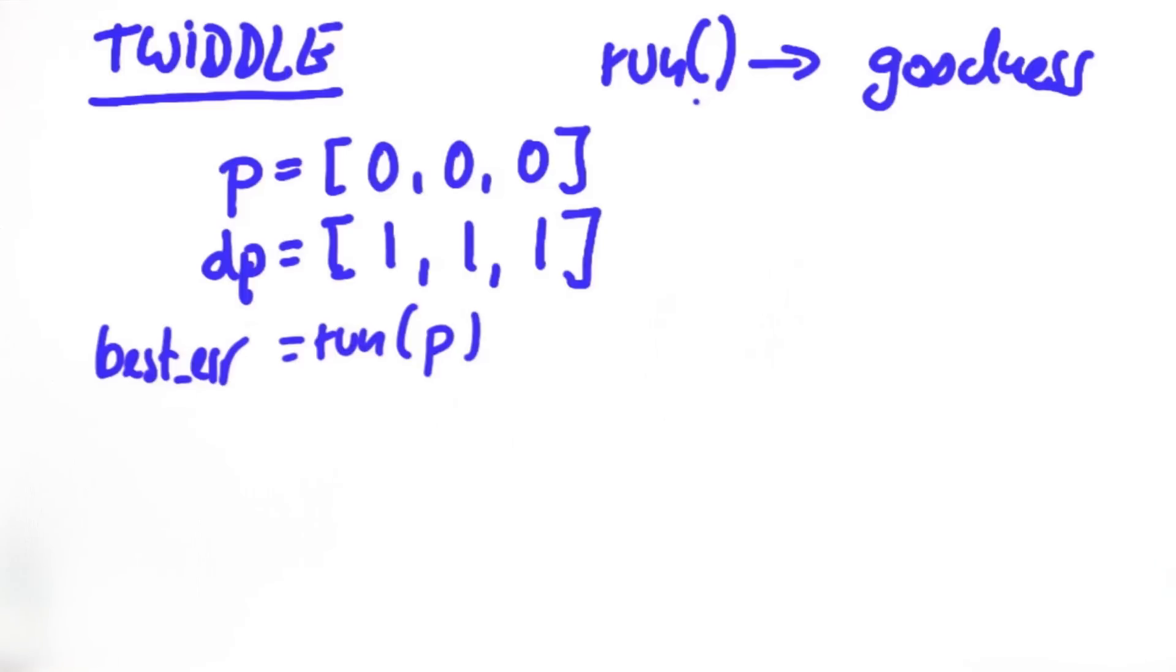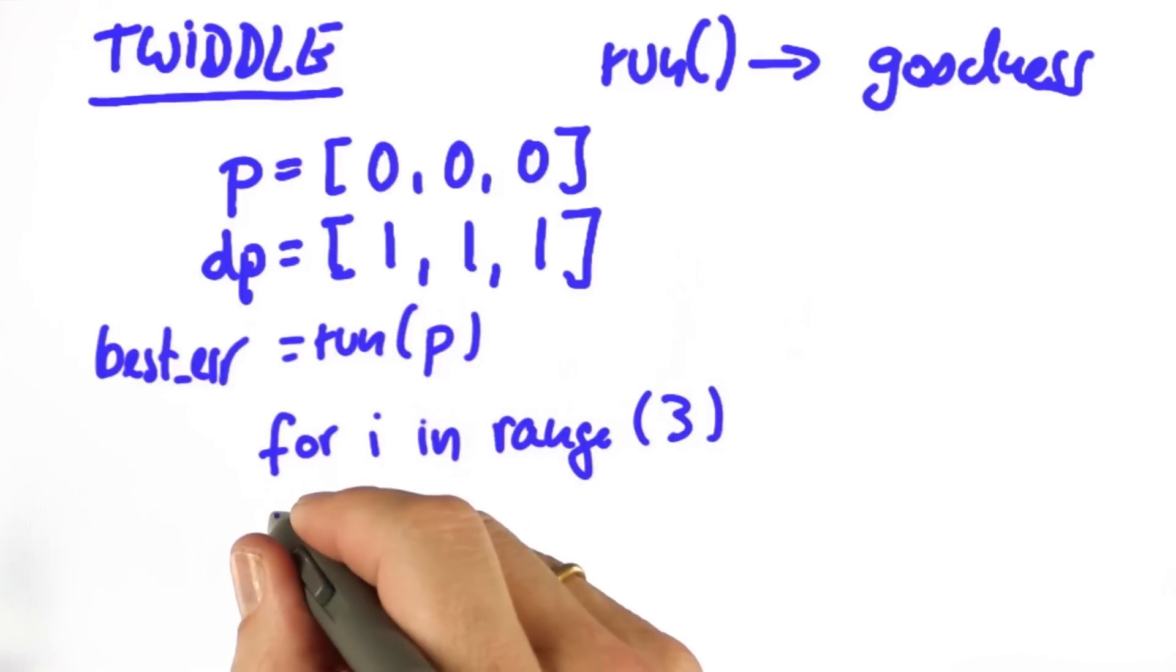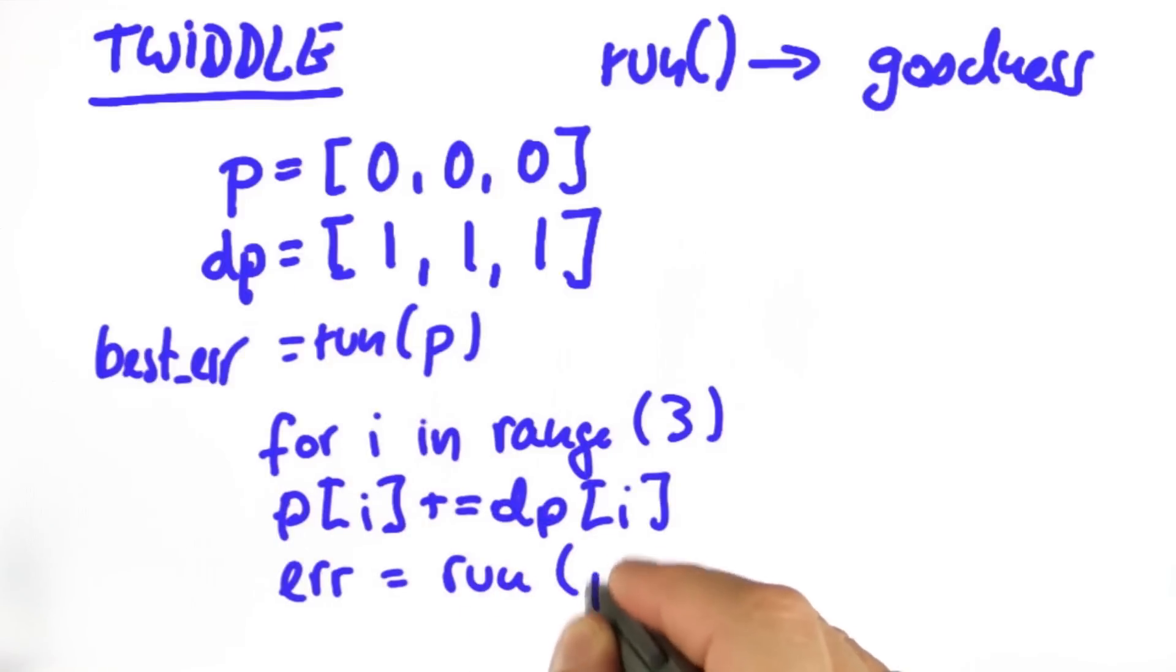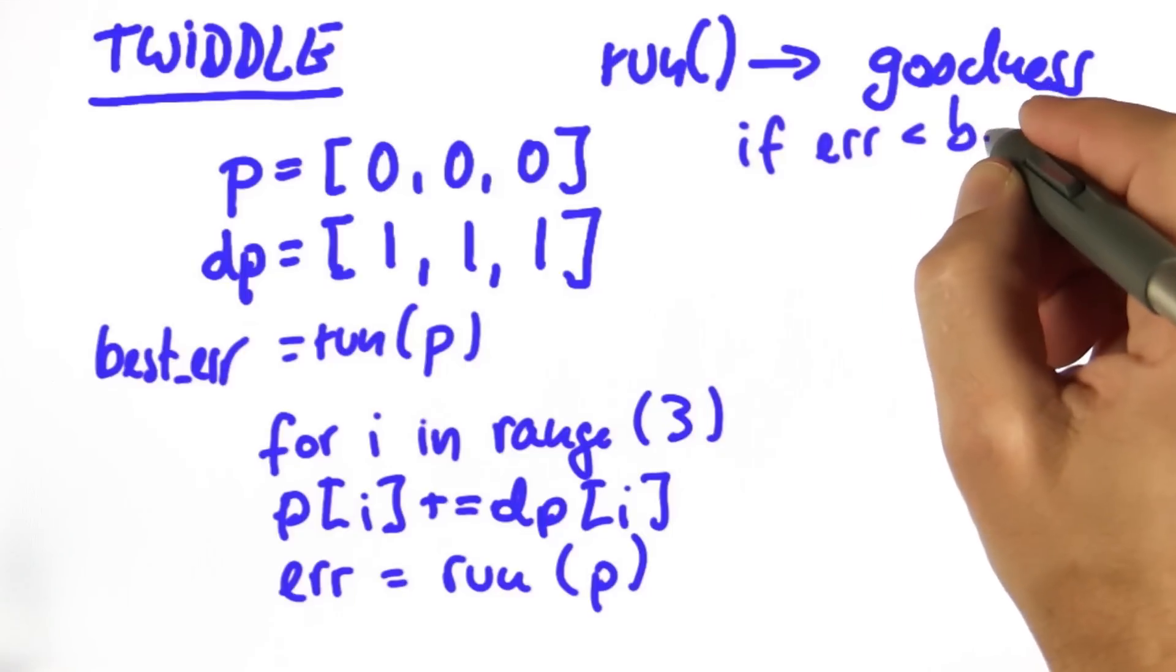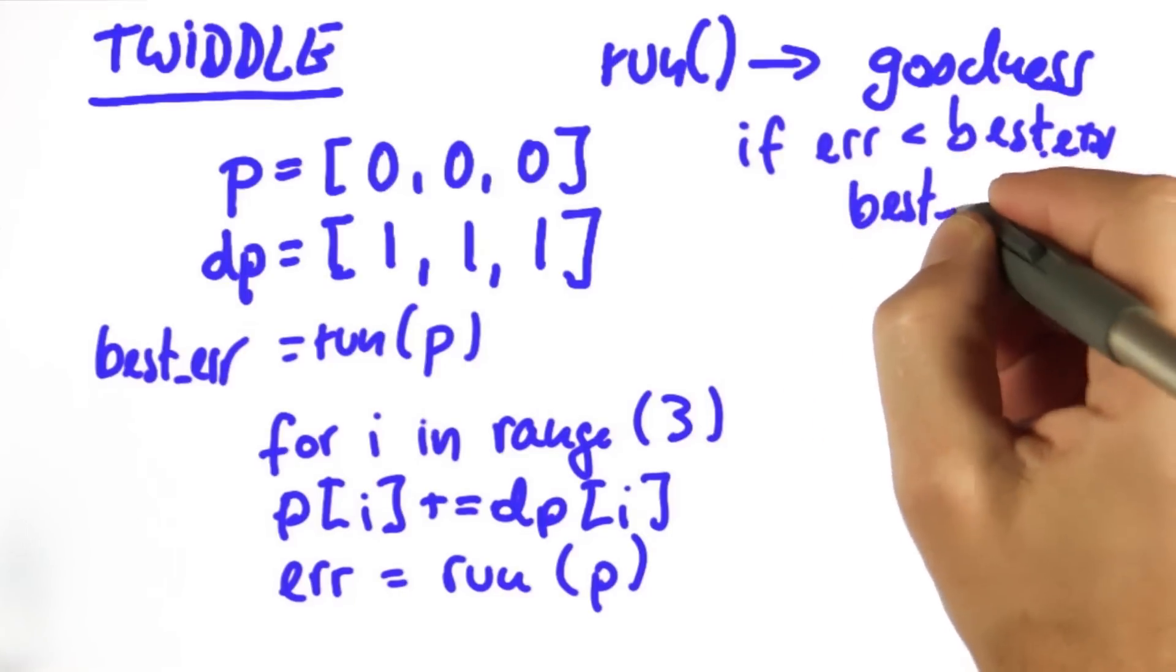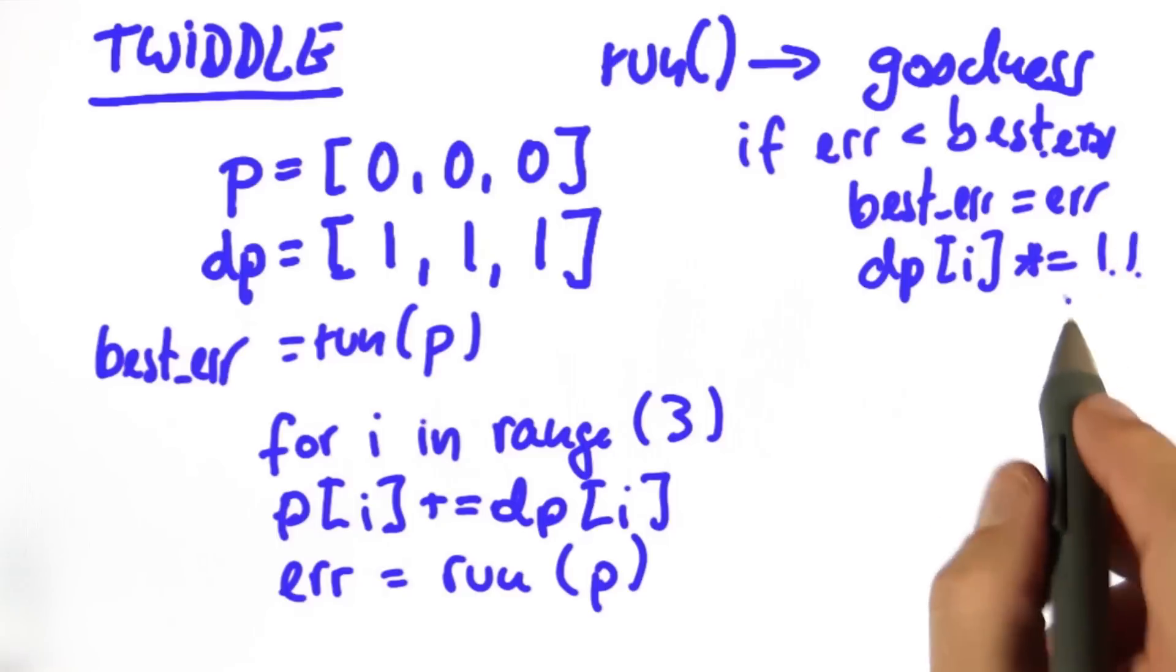It's a really smart algorithm, I believe. We sequentially go through these parameters. Obviously, you shouldn't write three, you should write len of p. And first, we try to increase p by our probing value, compute a new error for this new modified p. If this new error is better than our best error, then we do two things. First, we set best error to error, and we even modify our dp to a slightly larger value by multiplying it with 1.1.